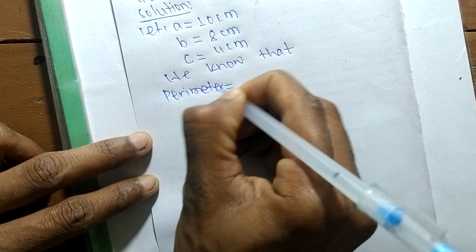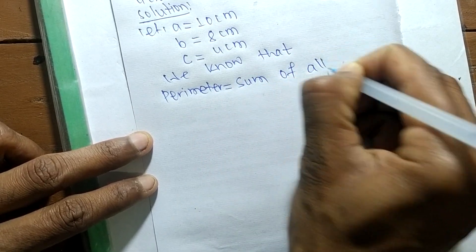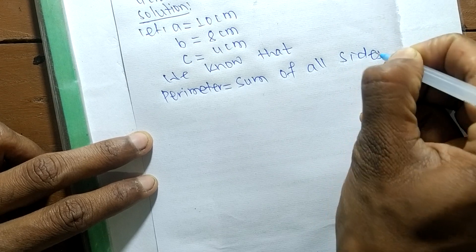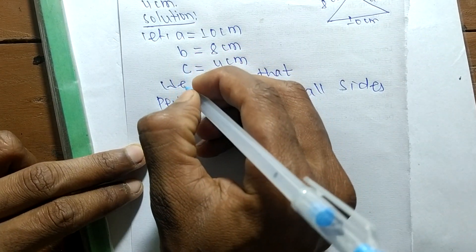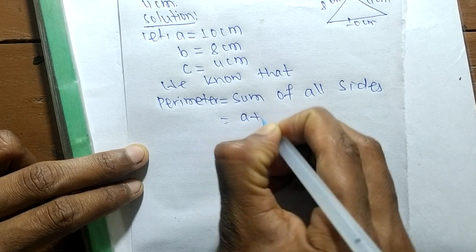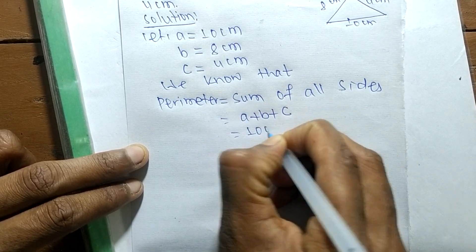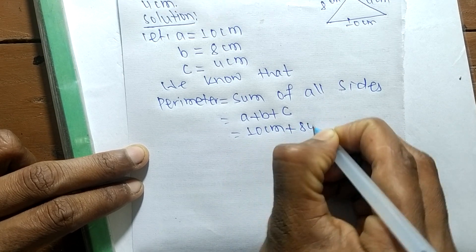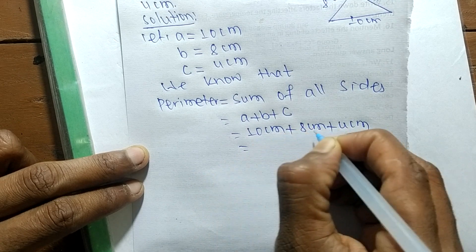perimeter is equal to sum of all sides. So the sides of a triangle are A, B, and C. So we can write A plus B plus C. The value of A, 10 cm, plus 8 cm, plus 4 cm. So 10, 8 is 18, plus 4 is 22 cm.